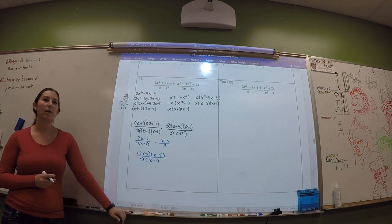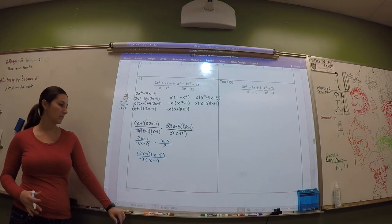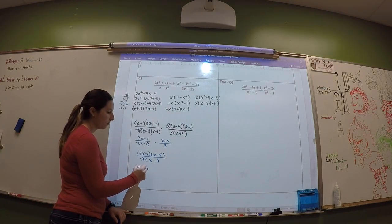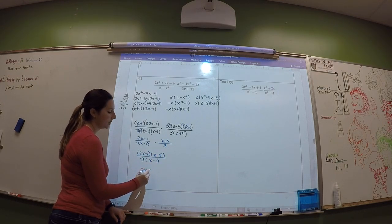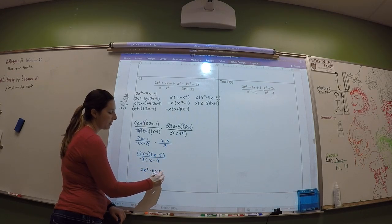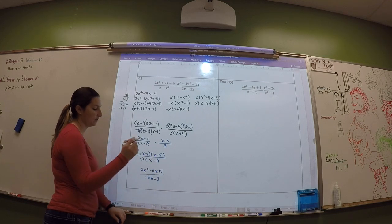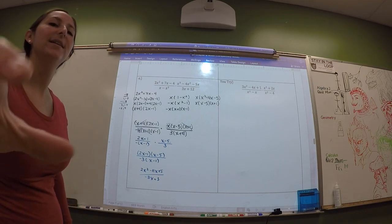And then we would multiply all that. Foil and whatnot. So that would give me 2x². Negative 10 and negative 1 is negative 11x. This is going to be positive 5. Down here we distribute and get negative 3x + 3. Ta-da! How did you just sound? Foil. Foil.